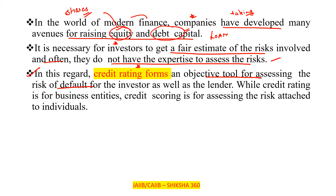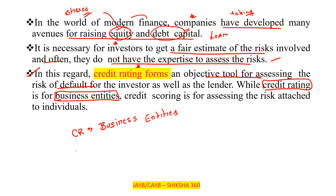Credit rating is basically for business entities — for companies. Credit scoring, on the other hand, is for assessing the risk attached to individuals.